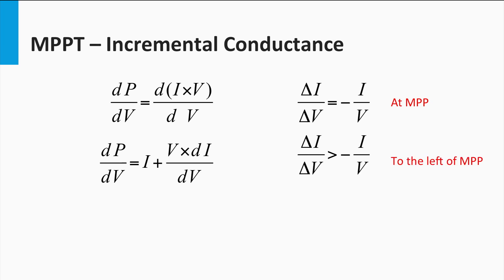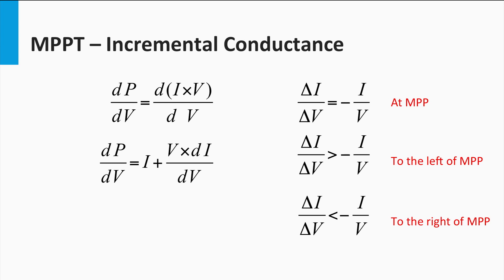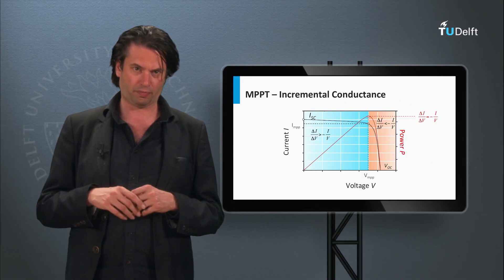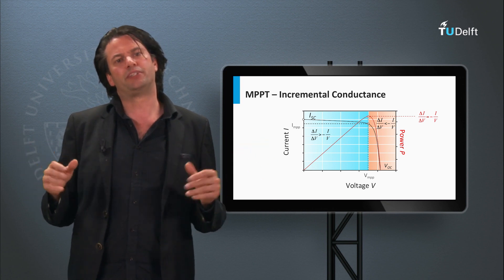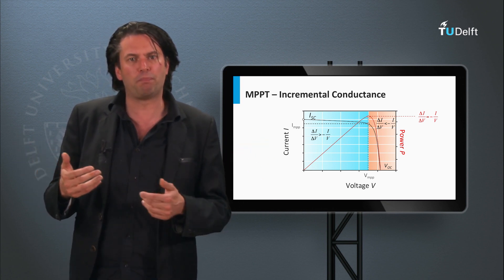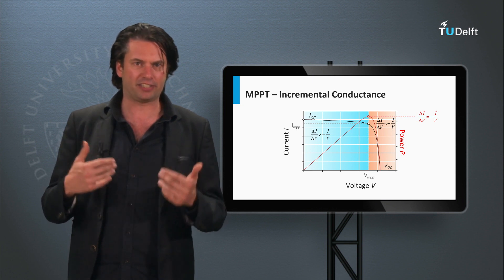To the left of the maximum power point on the PV curve, ΔI/ΔV is larger than −I/V. And to the right of the maximum power point on the PV curve, ΔI/ΔV is smaller than −I/V. The algorithm exploits these basic facts about the IV and PV curve of a solar module. In general, the algorithm imposes a voltage on the PV module at every iteration and measures the incremental change in conductance.